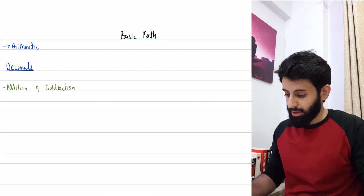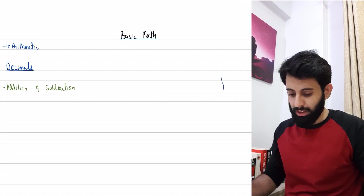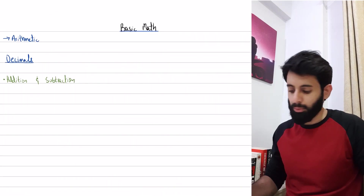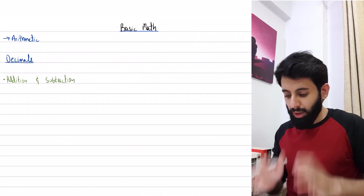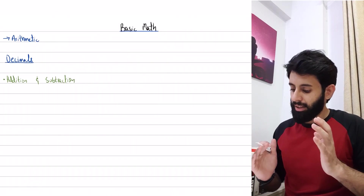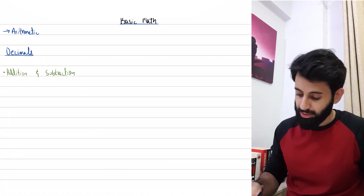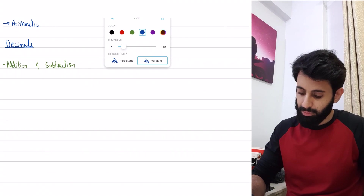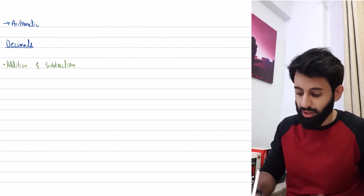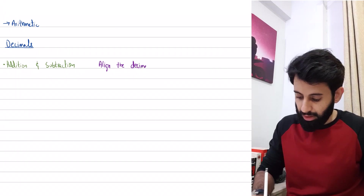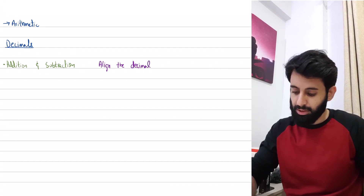We're going to start with decimals, specifically addition and subtraction. You'll find questions on addition and subtraction in Paper 1. The one thing you need to remember — and you can remember this in three words — is that you have to align the decimal. Whenever you're doing decimal addition or subtraction, this is the key rule.